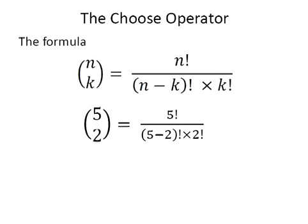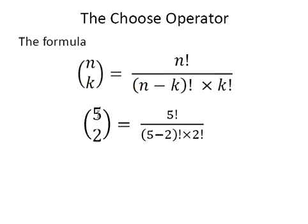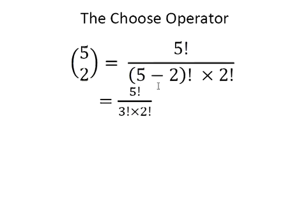Applying the formula, n equals five so we have 5 factorial on top. k equals two so we have 2 factorial, and n minus k is five minus two, giving us the factorial of that difference. Five minus two is three, so we have 5 factorial divided by 3 factorial times 2 factorial.